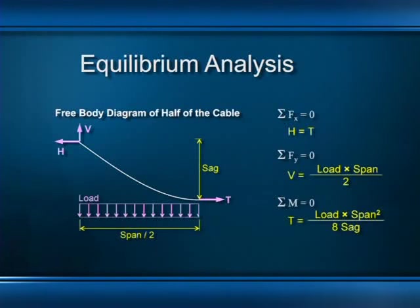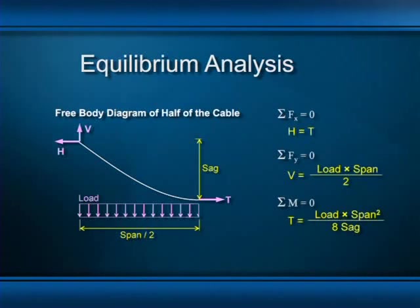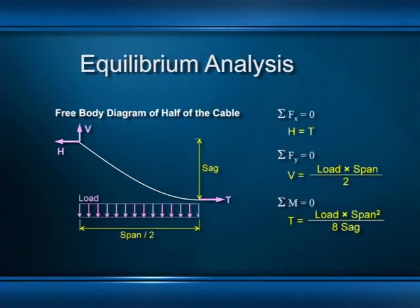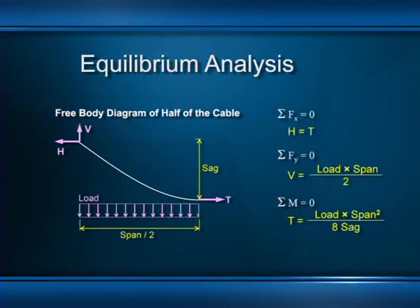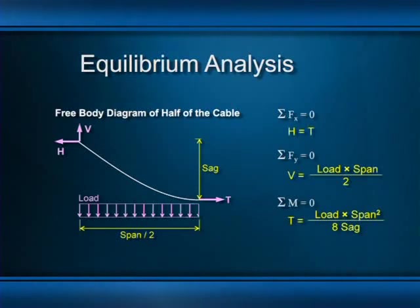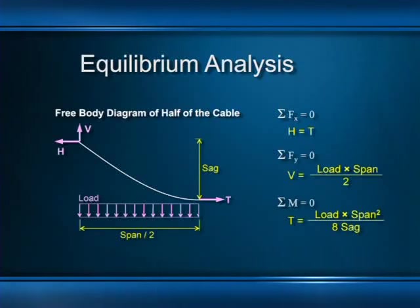Note that all dimensions and loads on our free body diagram are symbols rather than numbers, so the solution is expressed entirely in symbols. This allows us to draw generalized conclusions about how cables work rather than just looking at a numerical solution. The solution consists of three equations, each resulting directly from a corresponding equilibrium condition, and each has something important to tell us.